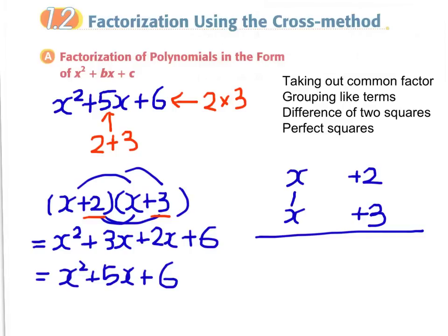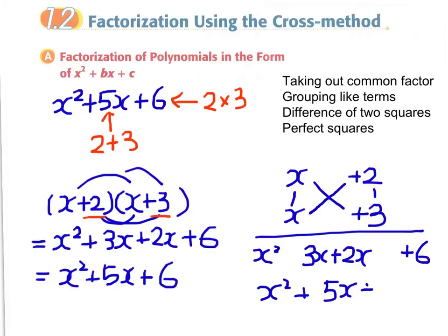Our picture will be even clearer if we write the two factors in a vertical format. Here, x times x gives x squared, and 2 times 3 gives plus 6. The middle term will be x times 3 plus 2 times x, giving 3x plus 2x, and finally we have x squared plus 5x plus 6. You can realize that the middle term involves a crossover multiplication — the sum of 3x plus 2x — there is a crossover here.